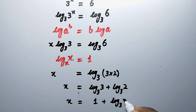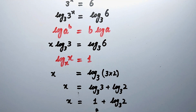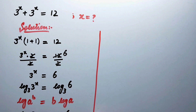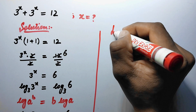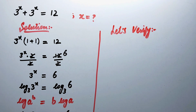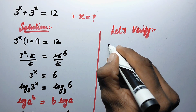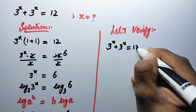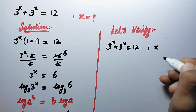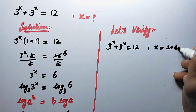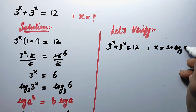So our final answer is x equal to 1 plus log to base 3 of 2. Now let's verify our answer. We will write our original equation: 3 to the power x plus 3 to the power x is equal to 12, where x is equal to 1 plus log to base 3 of 2.